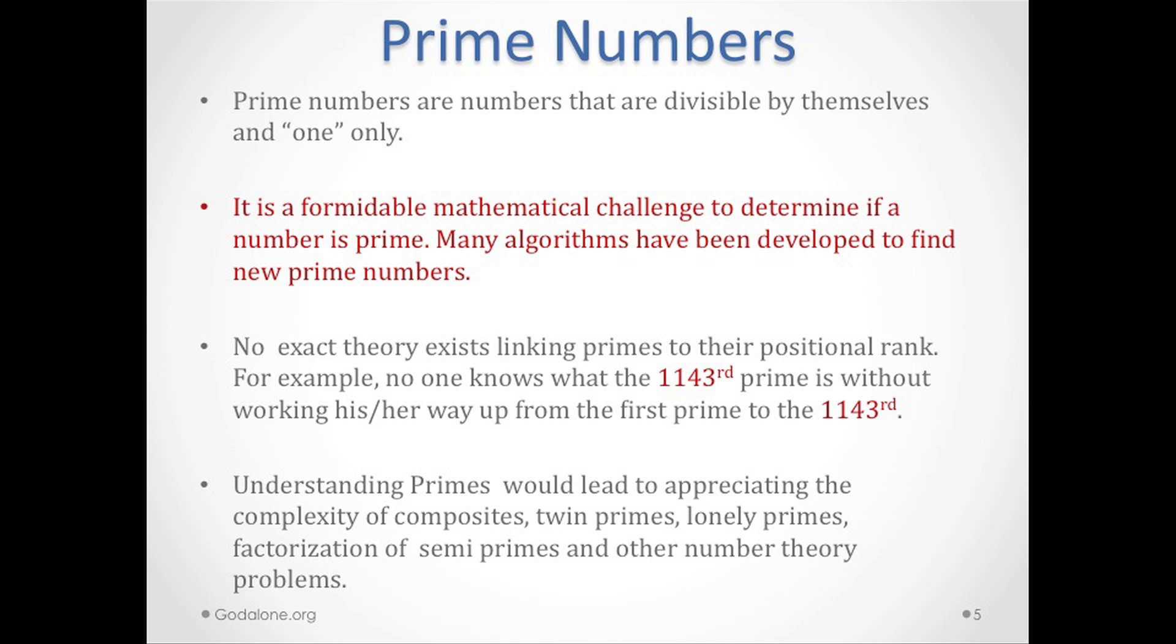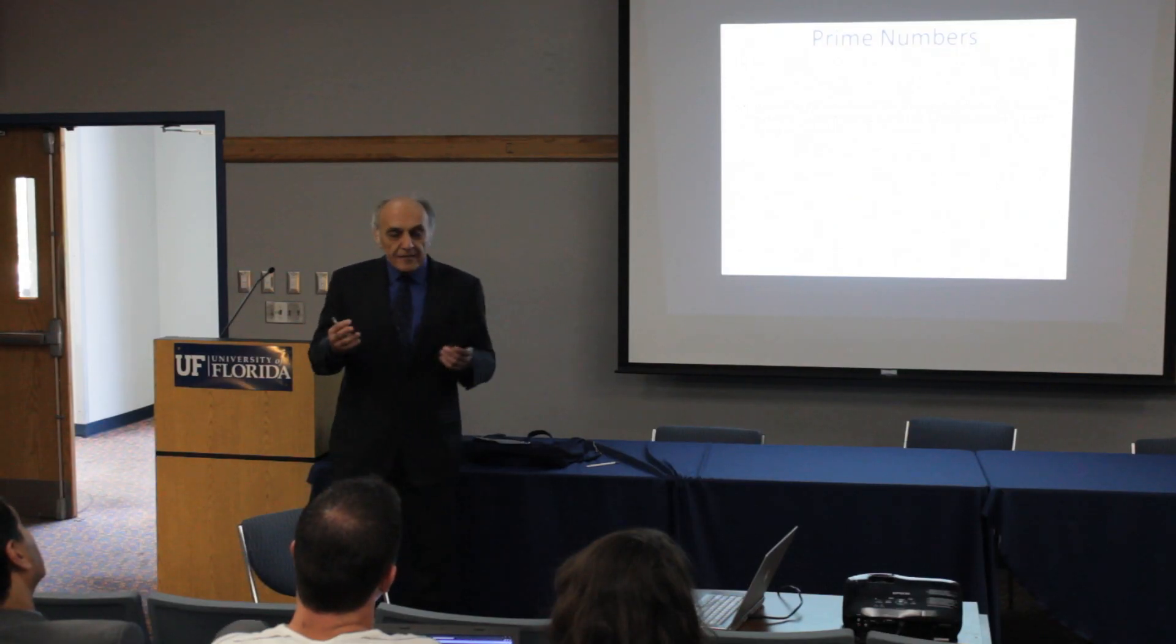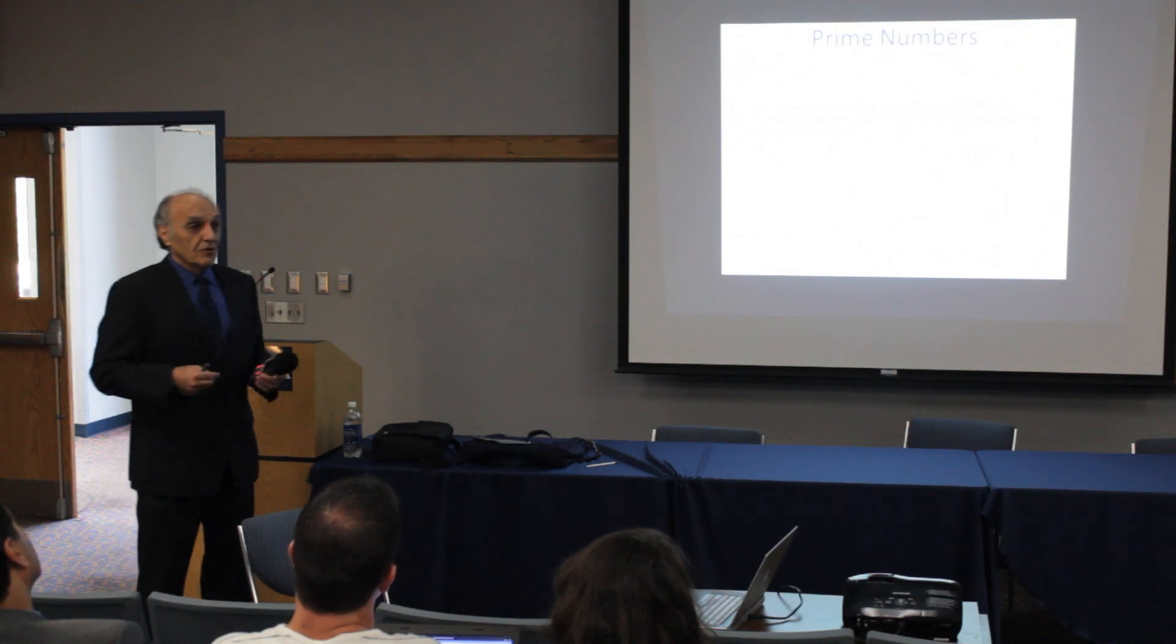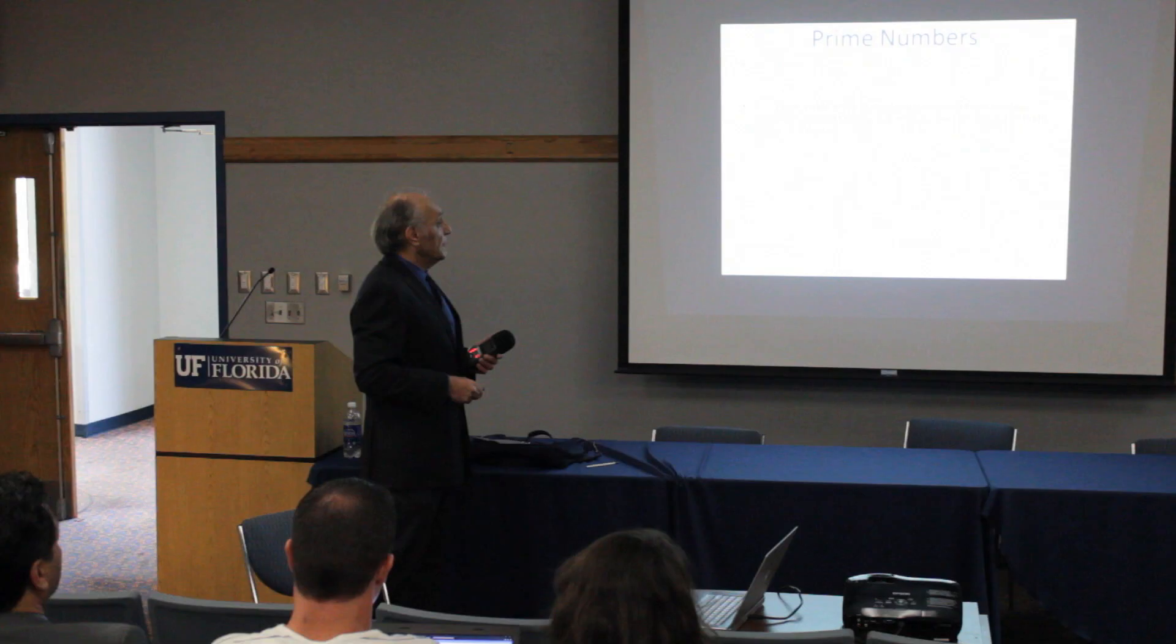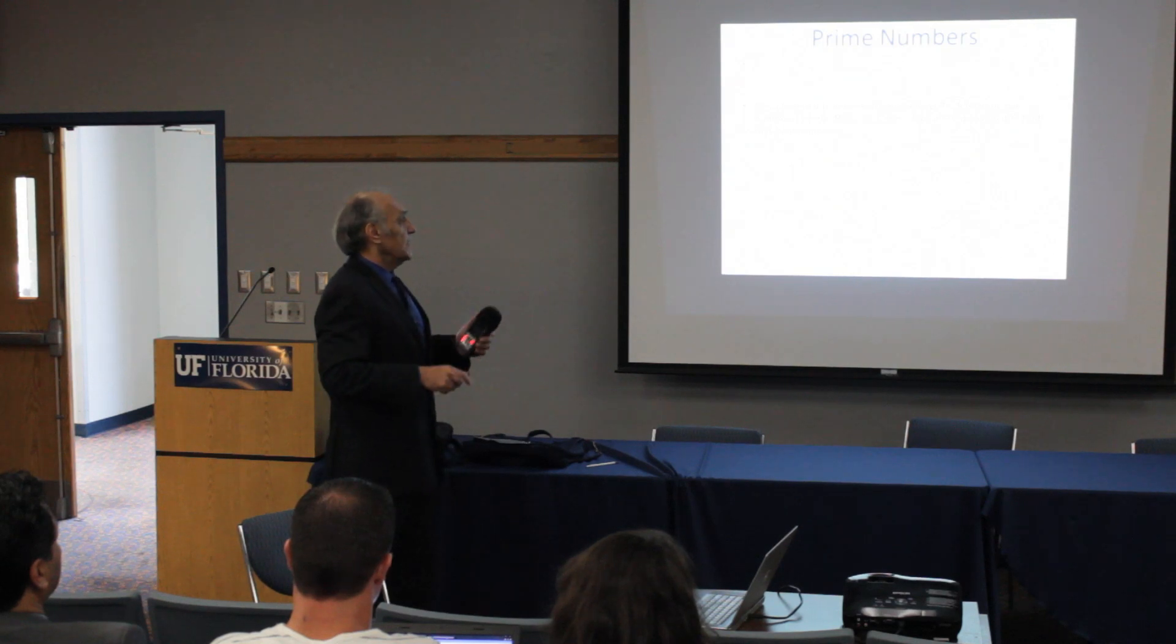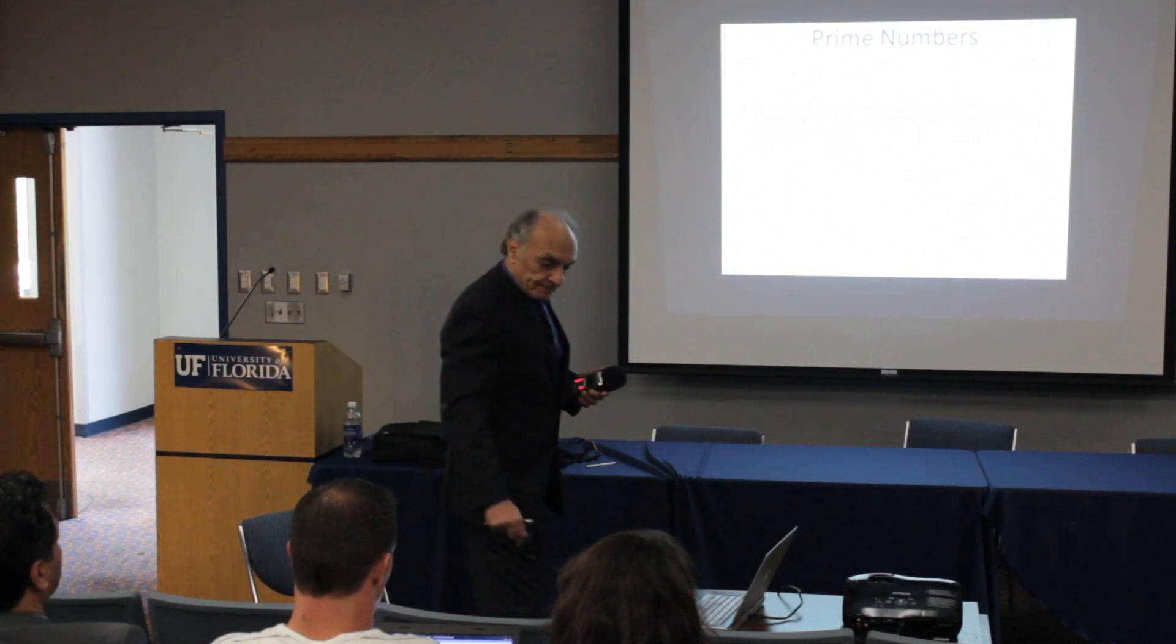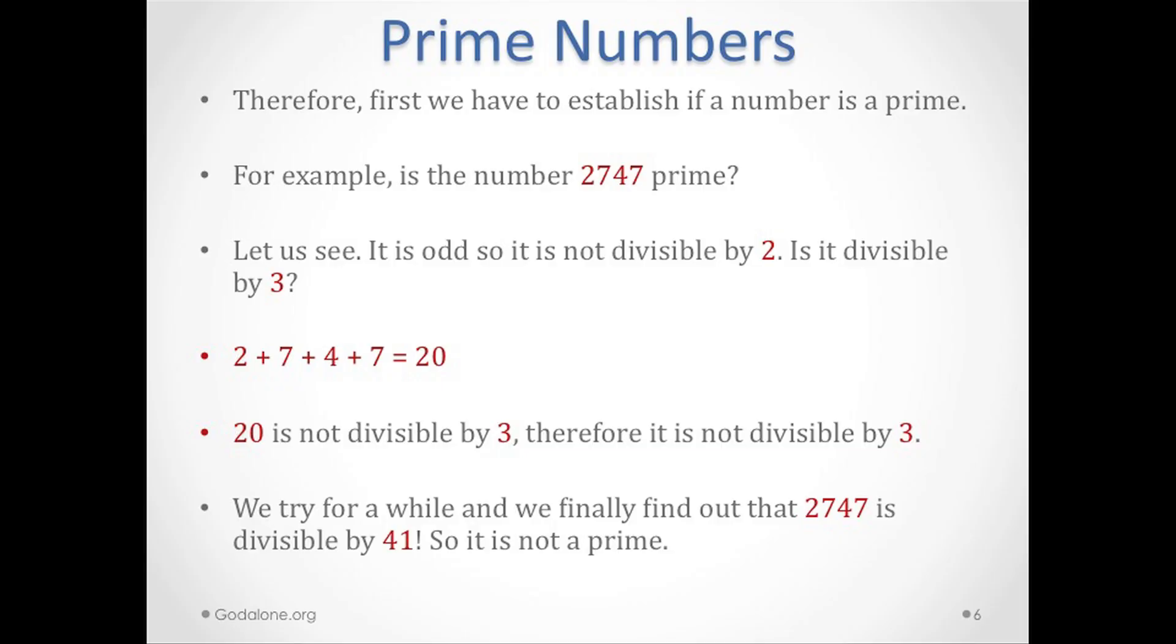No exact theory exists linking primes to the positional rank of the index. For example, no one knows what the 1143rd prime is without working his or her way up from the first prime to the 1143rd prime. That's what you have to do. If I ask anybody what is the 1143rd prime, nobody knows. You have to write a program, tabulate all of these, and then when you get to 1143 you look across and see what that prime number is. Understanding primes would lead to appreciation of the complexity of composites, twin primes, semi primes, and other number theory primes.